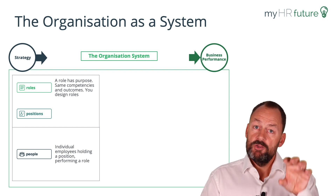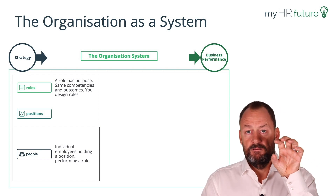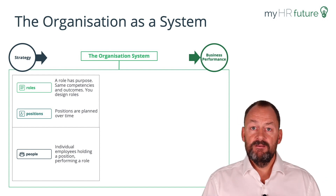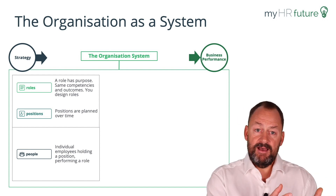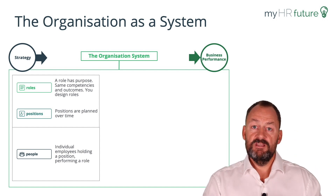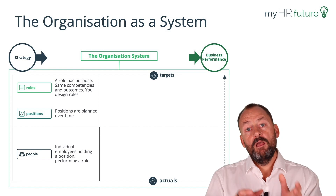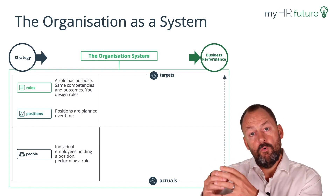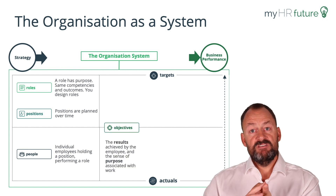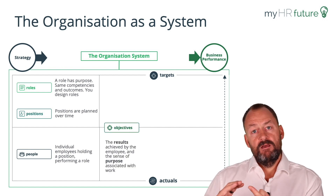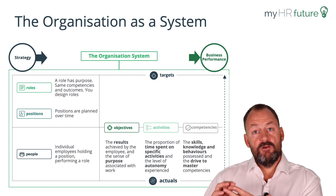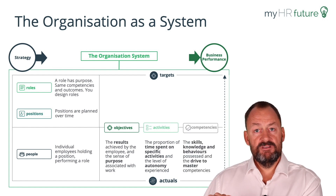You design the roles; positions are planned over time. For example, 'HR business partner' is the role, but 'HR business partner for supply chain or finance' is the position. The organization is broken into three elements: the objectives, which are the outcomes you want to achieve; the activities, the work you need to do; and the competencies — the skills and behaviors you need.